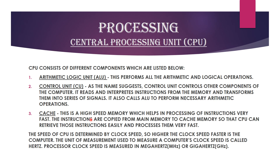The Control Unit also calls the ALU to perform necessary arithmetic operations. Cache is a high-speed memory which helps in processing instructions very fast. Instructions are copied from main memory to cache memory so that the CPU can retrieve and process them quickly. The speed of the CPU is determined by clock speed — the higher the clock speed, the faster the computer. The unit of measurement for clock speed is Hertz, and processor clock speed is measured in megahertz or gigahertz.